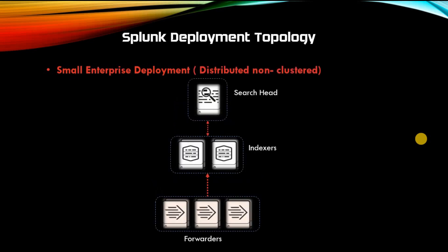The common Splunk deployment topology is the distributed one. You can have separate search heads and indexers — in basic distributed search, independent search heads manage searches for a group of independent indexers. If you have high data volume, distributed architecture is always recommended. Deploying multiple independent indexers allows you to scale indexing capacity linearly and implicitly increases availability for data ingest. Search performance can be maintained across large data sets through parallel search execution across many indexers.